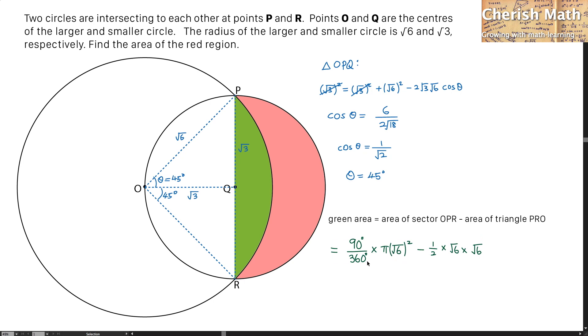Using 90 degrees out of 360 degrees times π times (√6)² minus 1/2 times √6 times √6, which is the area of the triangle. The value is 1.5π - 3.